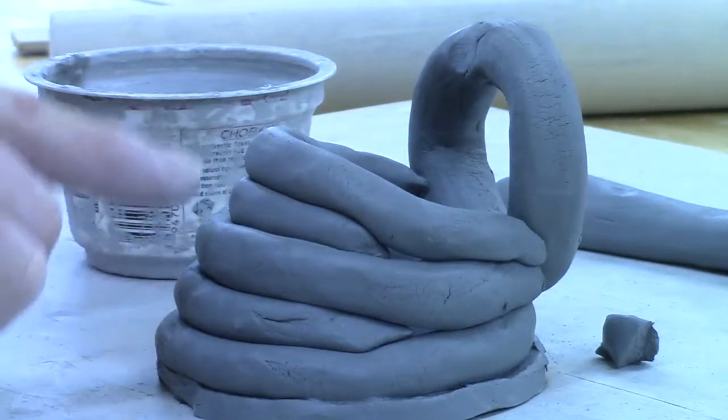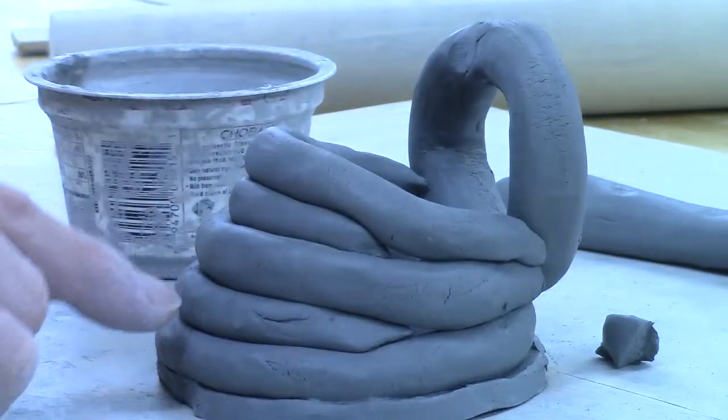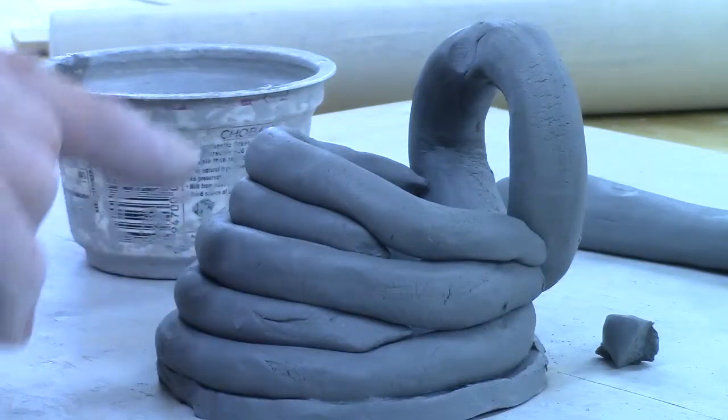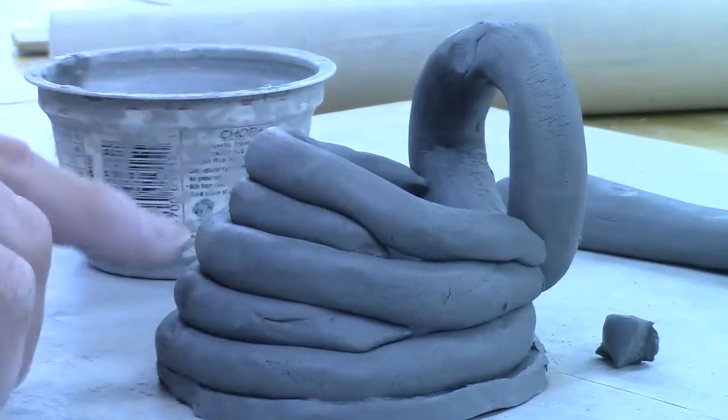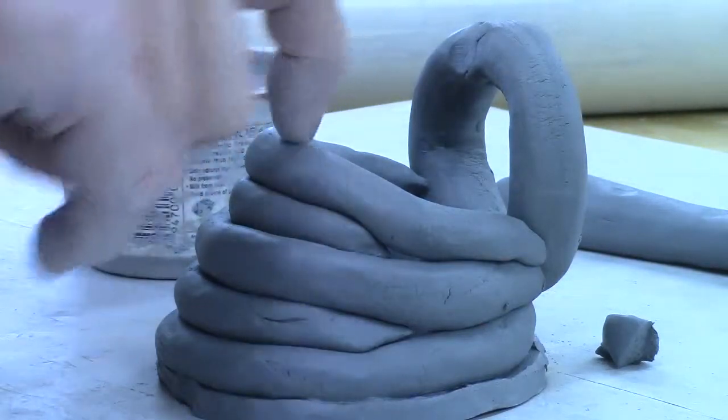And if I don't put it on the inside edge, what happens is it starts to go up and it never really turns the corner. So if it just keeps getting taller and taller and taller, that means that you're not putting the coils on the inside edge.